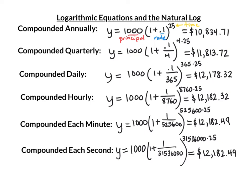Take a look at these numbers and notice something odd. Compounding once a year gives $10,834.71. Quarterly gives $11,813.72 — a nice jump. Daily gives $12,178.32, another good jump. Then hourly, the difference is much smaller — it only went up $4.